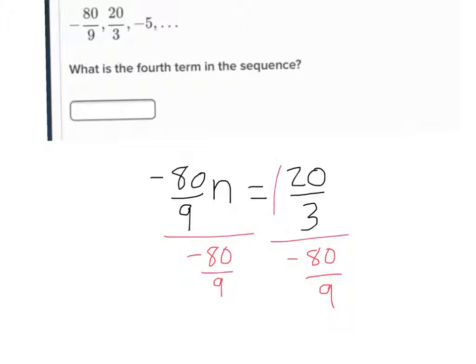And so I've got a fraction, 20 over 3. I've got to make sure I put it in parentheses. Divided by negative 80 over 9. And so you get that n equals negative 0.75, or you could say n is negative 3 fourths. So is that my answer?